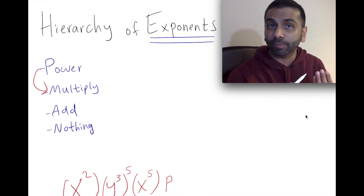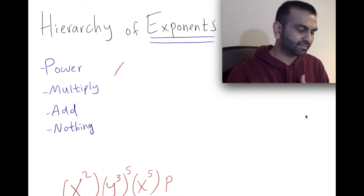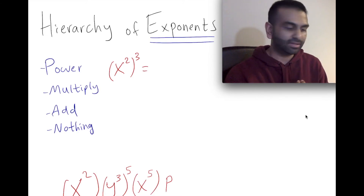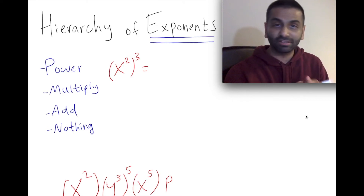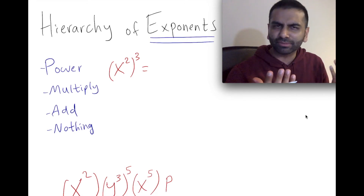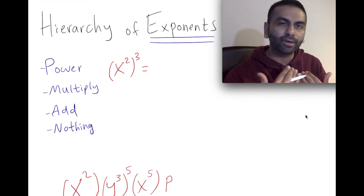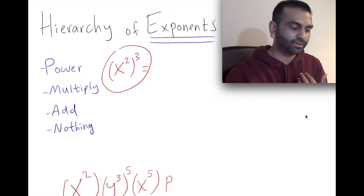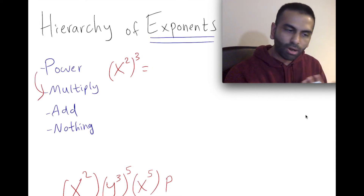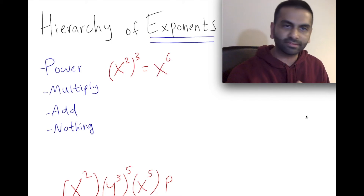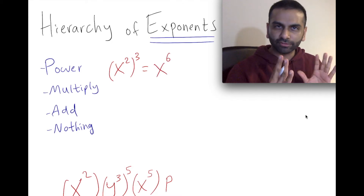So if you have something like x squared to the third power, the natural question is: how do you simplify this? Do you take two to the third power to get eight, do you do two times three to get six, or do you do two plus three to get five? The easy way to remember it is you do one thing below in the hierarchy. Since this is a power, you're going to multiply — so x squared to the third power equals x to the sixth.